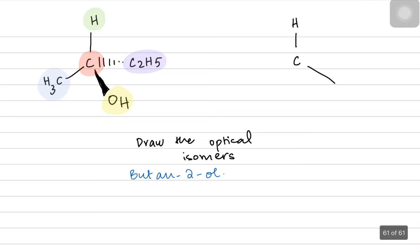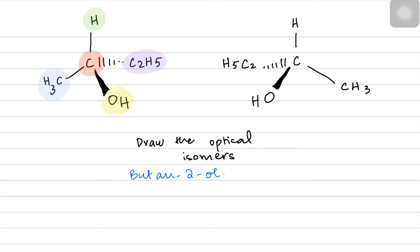This time the CH3 would be on the right side rather than the left, the wedged line would be coming from the left with the OH, and the dashed line would also be towards the left, which is C2H5. This is how we draw the optical isomer 3D structure.